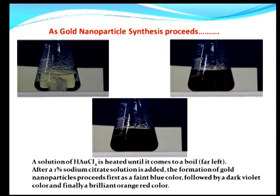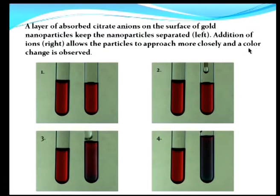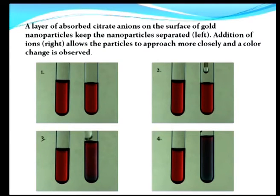As the nanoparticle synthesis proceeds there is a change in color, and what is also seen vividly is that a layer of adsorbed citrate ions on the surface — which is a charged layer — by electrostatics keeps the nanoparticles separated. The further addition of certain ions allows the particles to approach each other, and the color changes. Therefore there is a change in color that also depends on the relative distance between gold particles in a colloidal solution — in addition to a change in color due to the size of the gold nanoparticles.